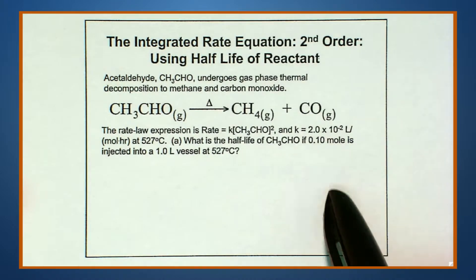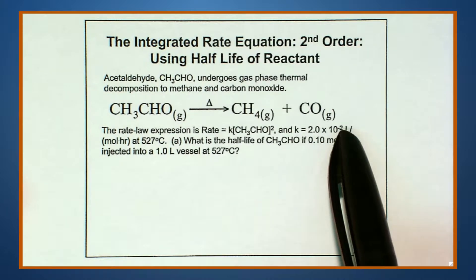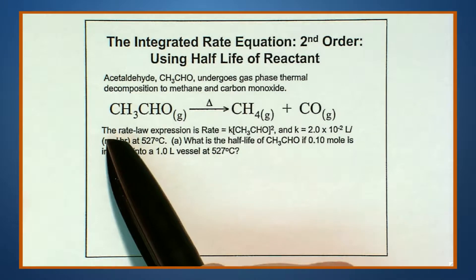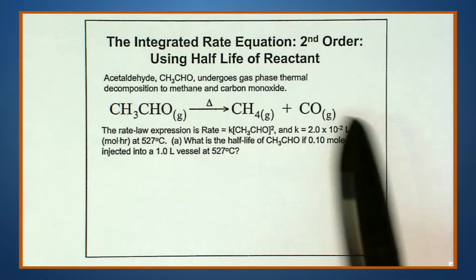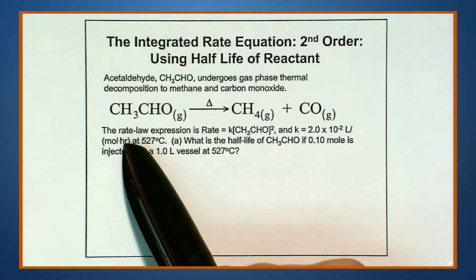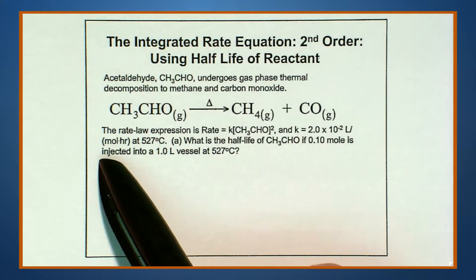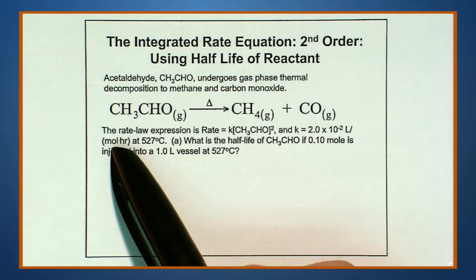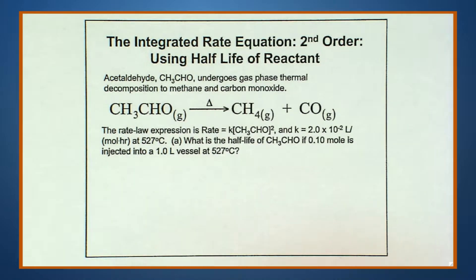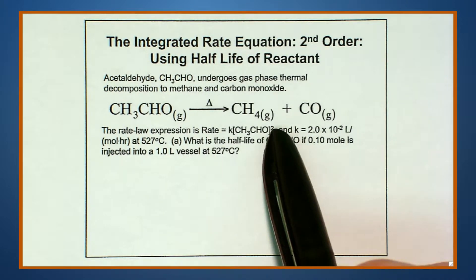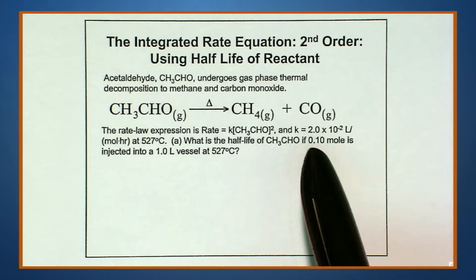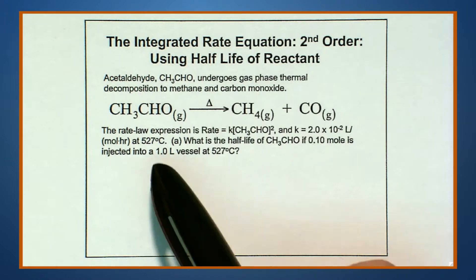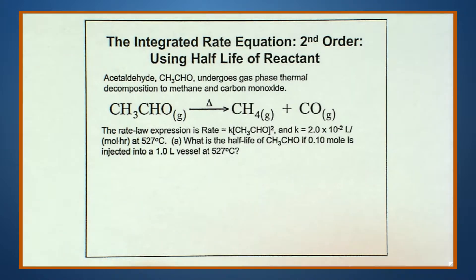There's one more way of knowing it's second order: look at the units for k. We have liters per mole times hours, so there's a per-time unit, which every k has, and then liters per mole, which is molarity to the minus one. That means the overall power of molarity in the rate equation must be two — which matches the exponent. So if you're just given k, focus on the units and you can figure out the overall order, even if you can't determine the individual orders.